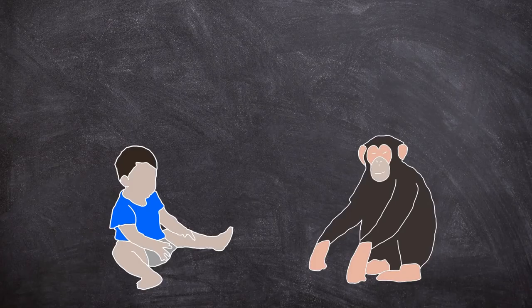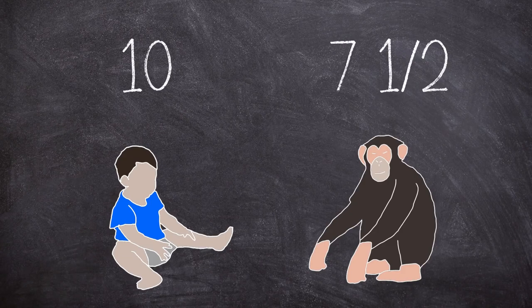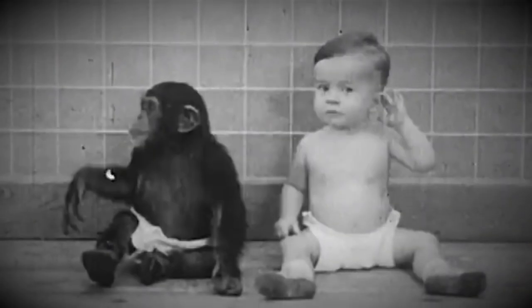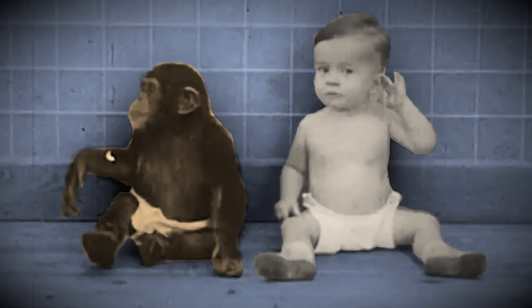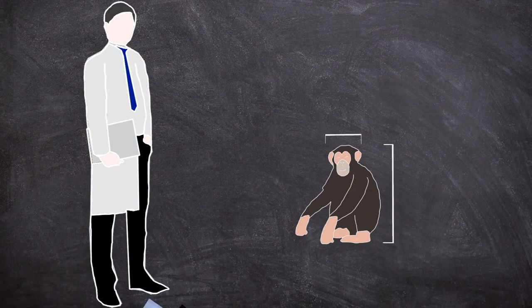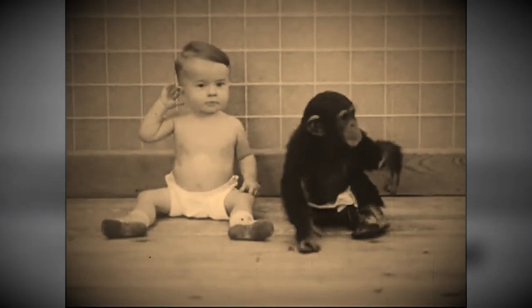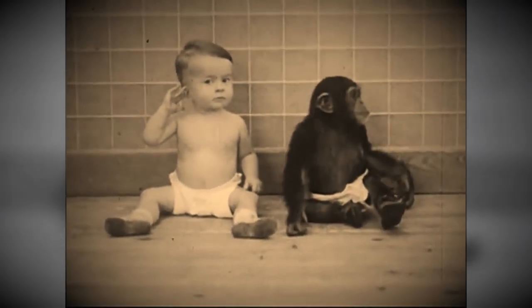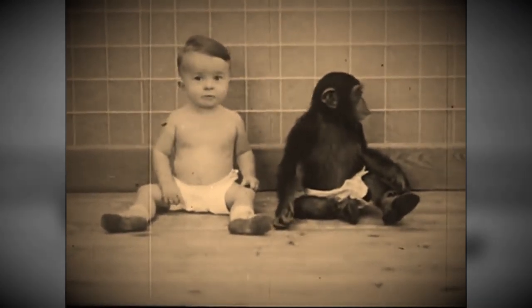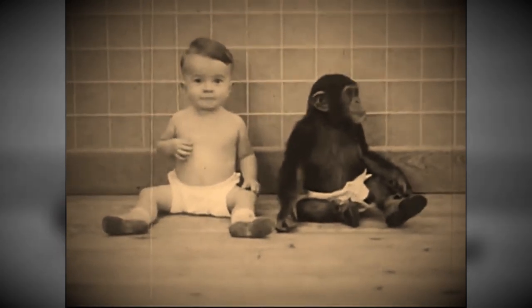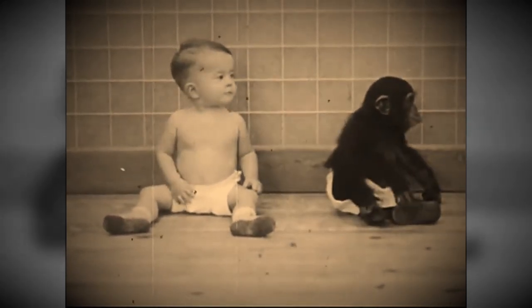Gua and Donald were introduced at the ages of seven and a half and 10 months respectively in the summer of 1931, and in every conceivable way the two were treated by Winthrop and Luella as if they were brother and sister. Straight away the Kelloggs started noting the physical and behavioral differences between the two infants. Gua had longer arms than Donald and much greater physical abilities. Gua had nearly all of her teeth whereas Donald only had two.